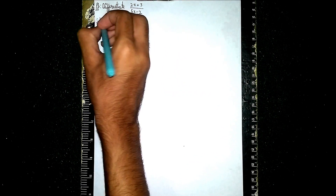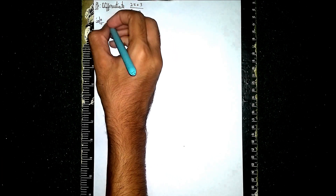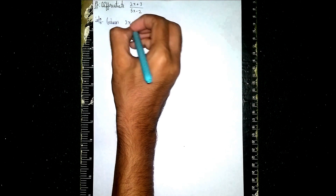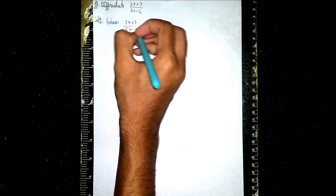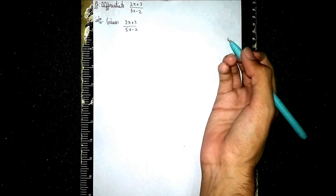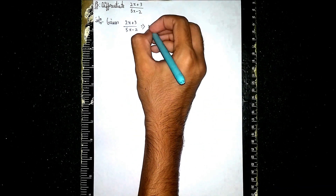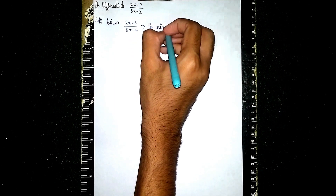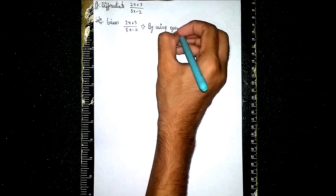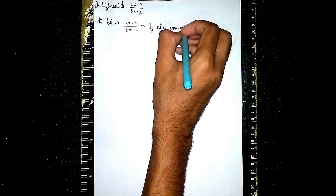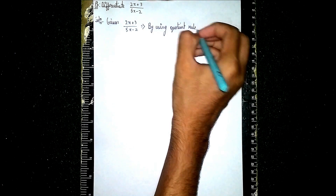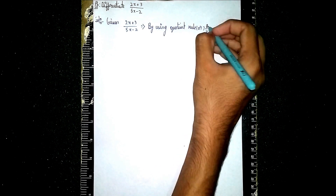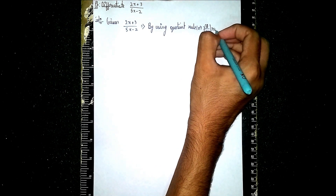In the solution, first we write what is given. Given: (2x + 3) / (5x - 2). Now we don't have a direct formula for this — we use the quotient rule, also called the u by v rule.